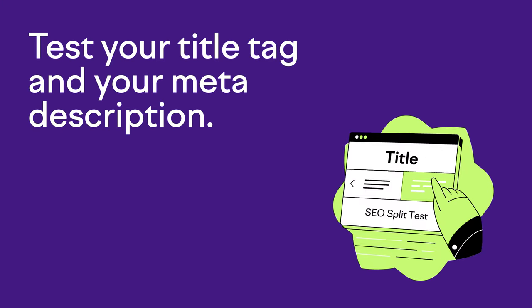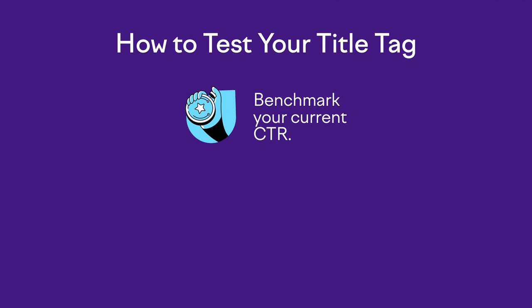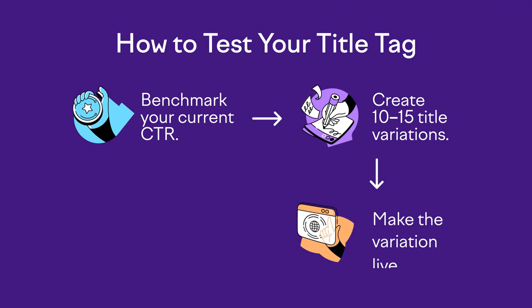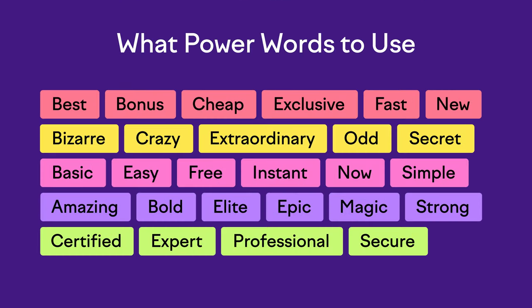The biggest lever you can test is going to be your title tag and your meta description. I recommend testing many different title tags to see which one produces the highest CTR. Just benchmark your current CTR, come up with 10 to 15 title variations, push the variation live, and let it collect data for at least two to four weeks. Then repeat this process over and over until you find a winner. What should you test in your title tags? I recommend injecting power words and numbers, because they tend to produce a better click-through rate — which is why news outlets use them with such high frequency.